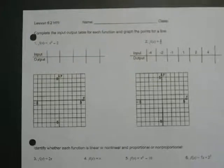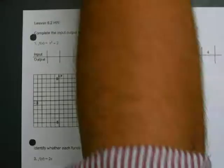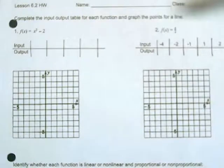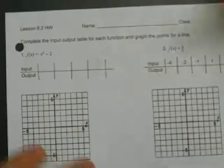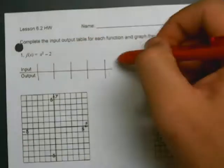Hey what's up guys, it's Mr. Hypoch here with homework help video on lesson 6.2 homework. Looking at this, you want to complete the input and output tables for each function and graph the points aligned. So basically what you're doing with both 1 and 2 is you're going to have to pick numbers. I'd go with smaller numbers like negative 1, 0, 1, 2 in order to find those points.